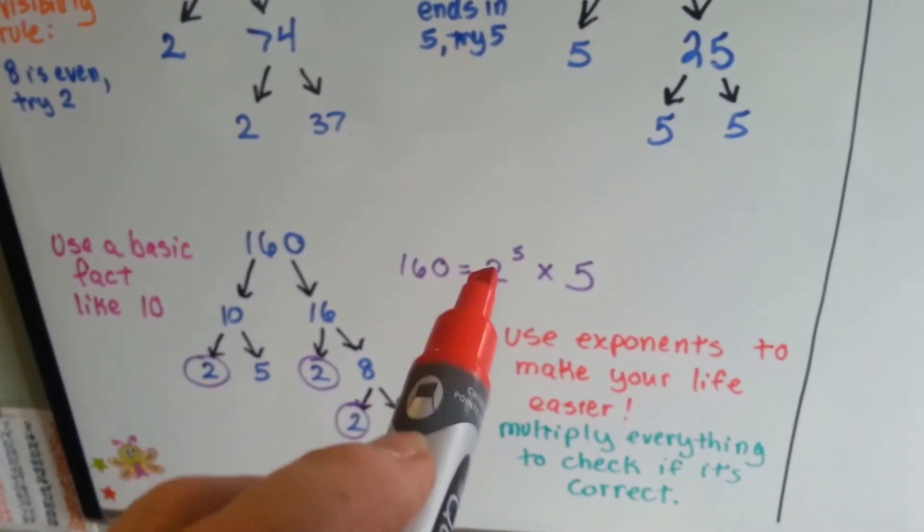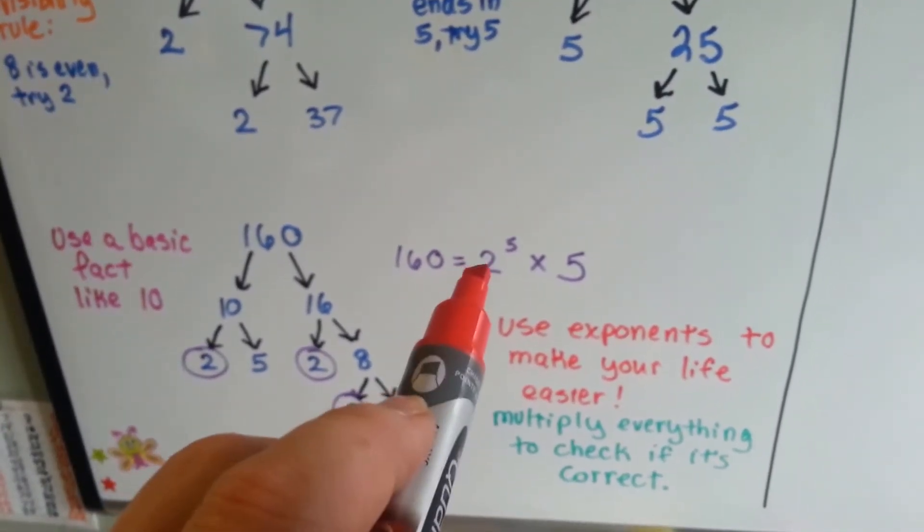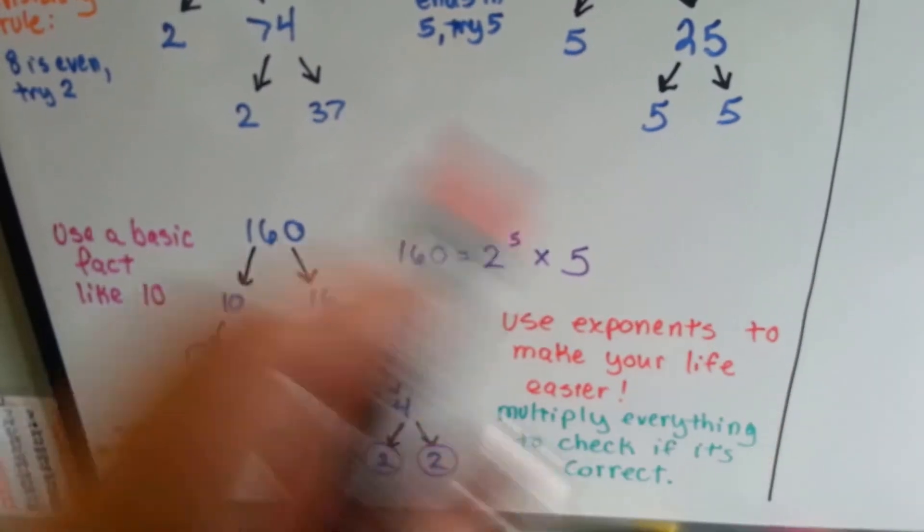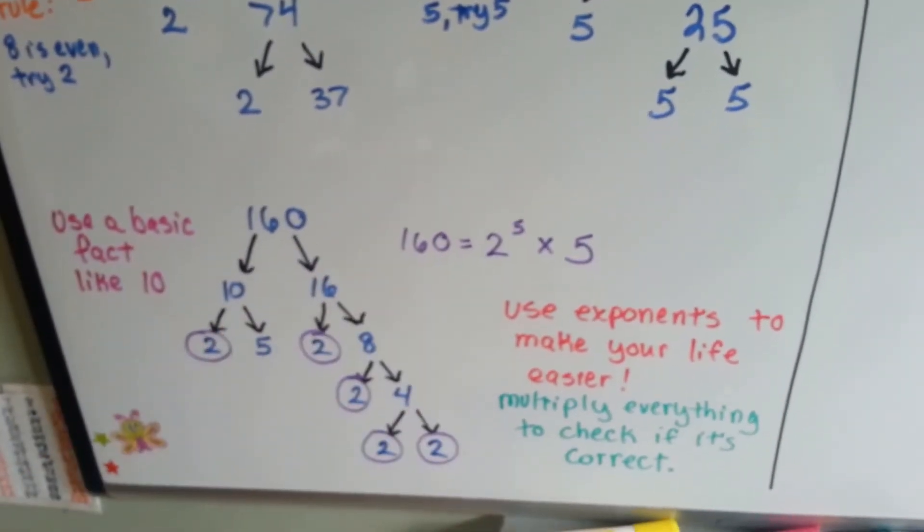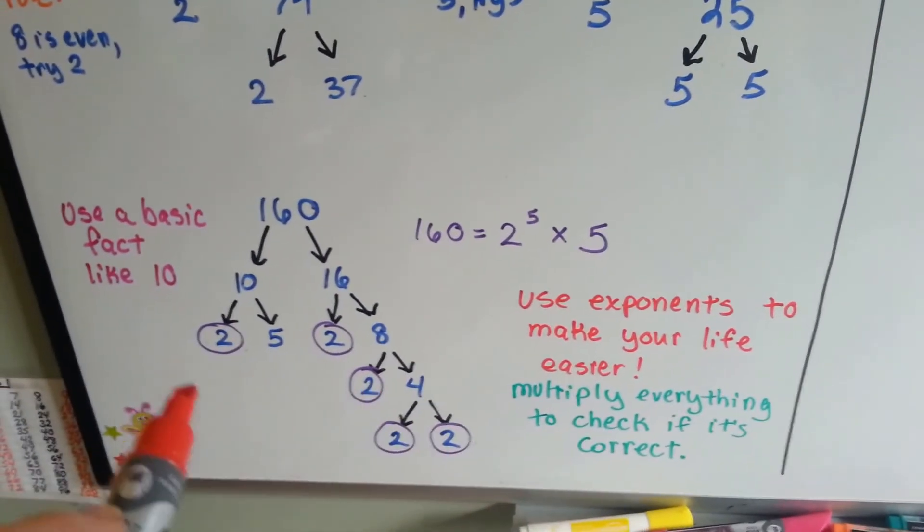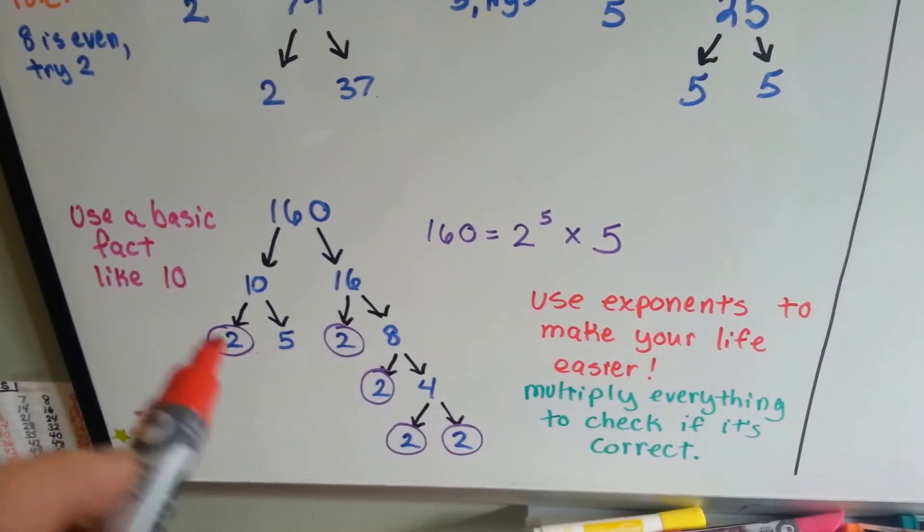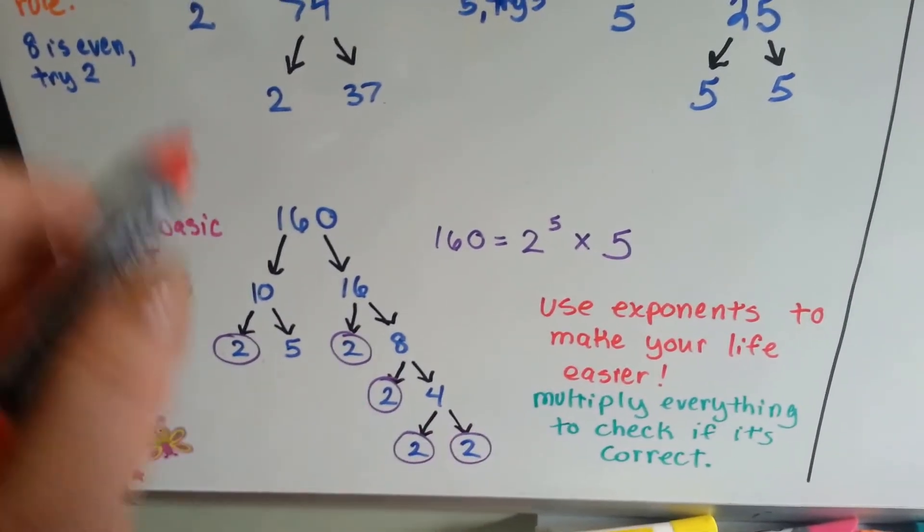You use exponents to make your life easier. Can you imagine if we wrote 2 times 2 times 2 times... Easier to just put a little 5 up there. Now, if you're not sure if you did it right, just multiply everything and check if it's correct. Just go backwards.